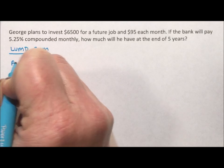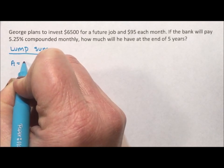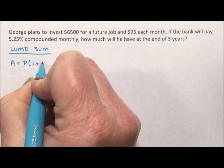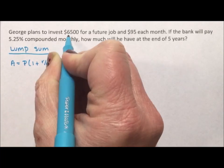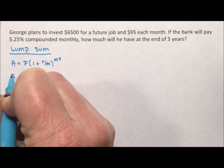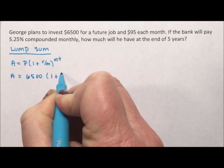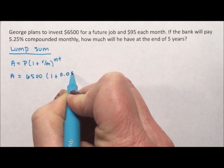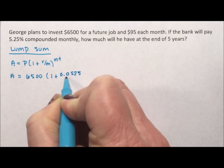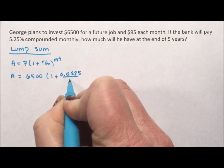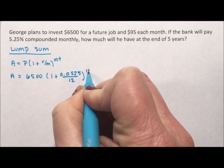Your lump sum is going to be compound interest: A equals P, 1 plus r over m to the mt. The lump sum is $6,500. So $6,500, 1 plus 0.0525 divided by 12 to the 12 times 5.